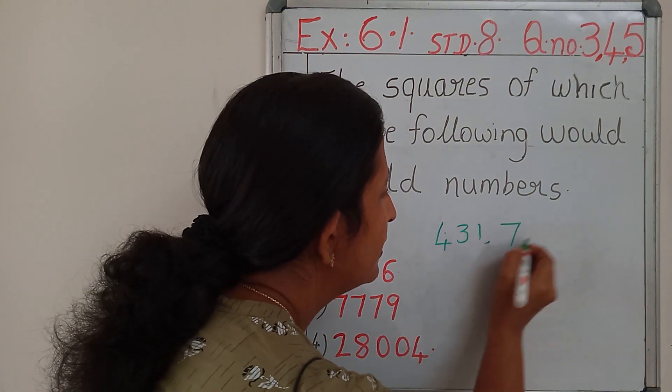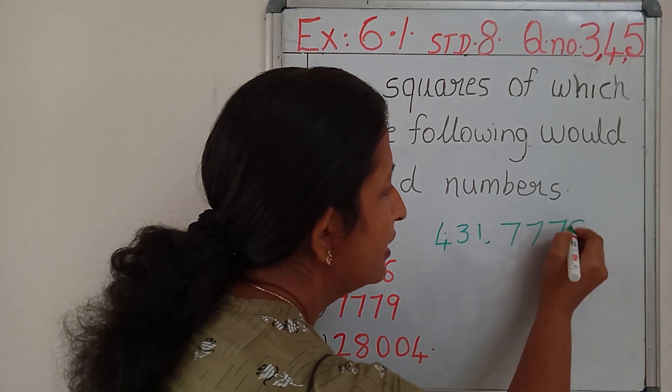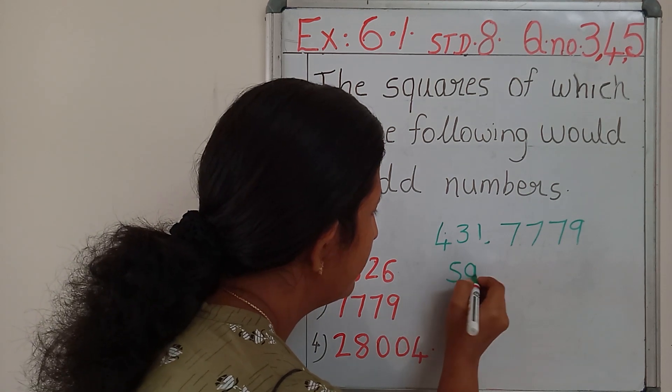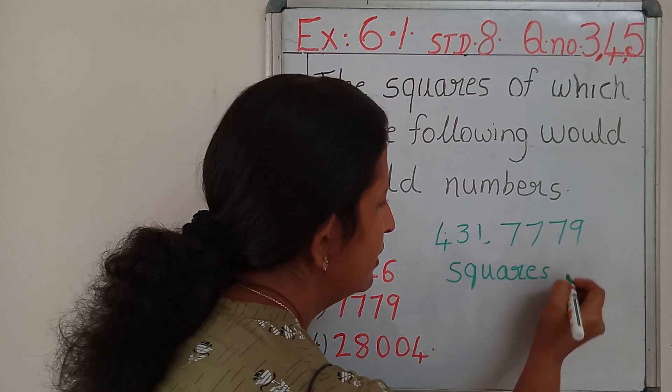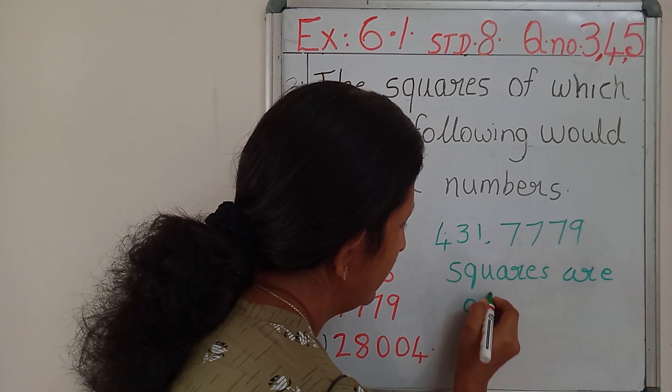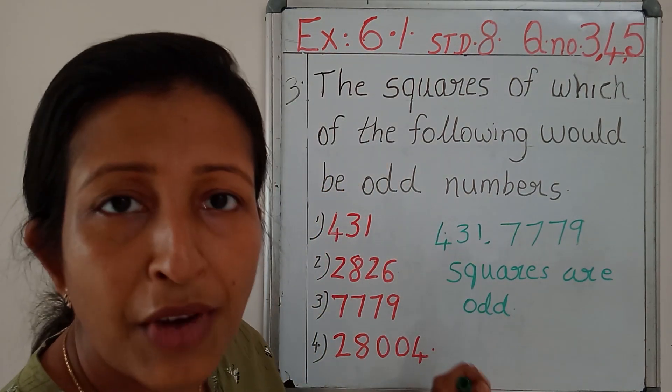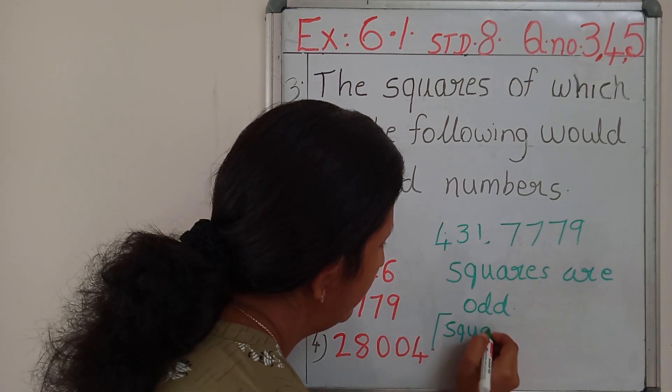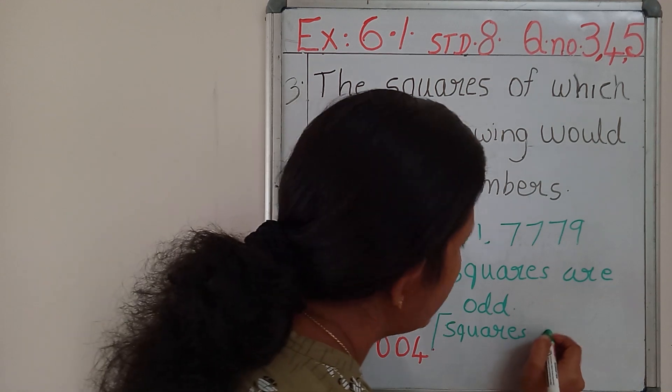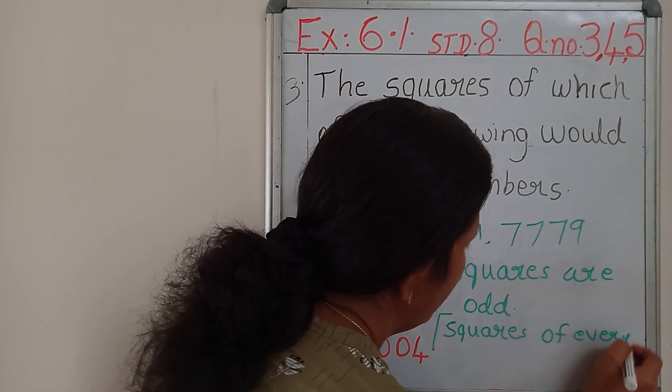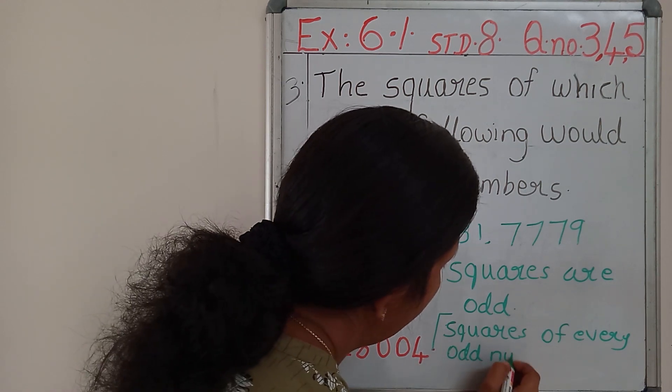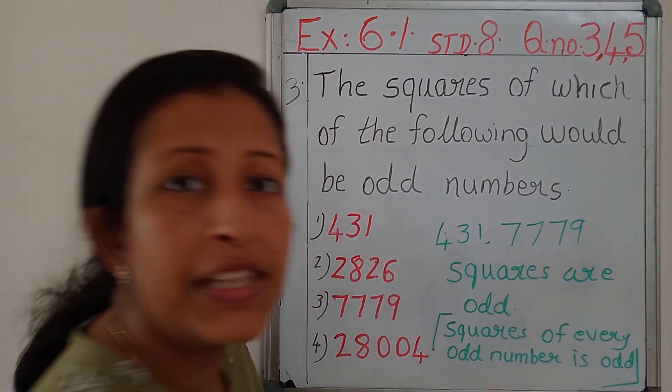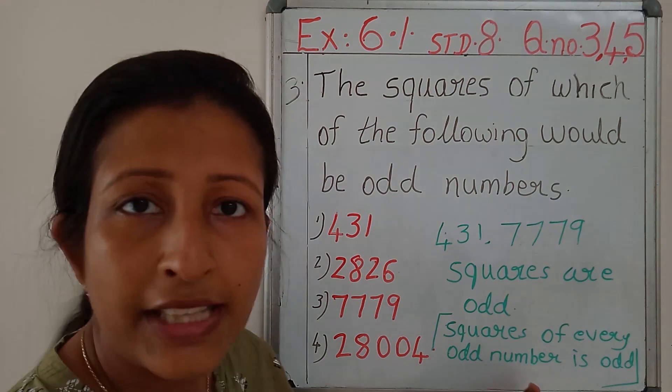7779 is again an odd number. So its square, squares are odd. Squares of these numbers are odd. Why? The property is: squares of every odd number is odd. And one more property says that the squares of every even number is even. No need of writing that property here.